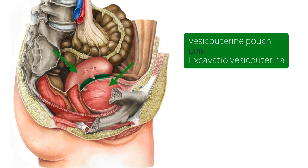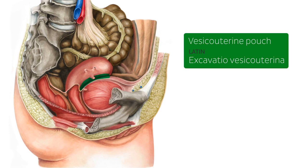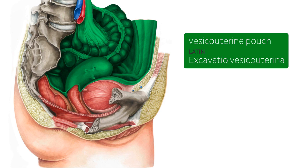Note that the vesicouterine pouch is of course only found in the female pelvis, since it requires the presence of a uterus. So let's talk about how the vesicouterine pouch is formed. As we can see in this slide, the urinary bladder and the uterus are infraperitoneal organs, meaning that they lie inferior to the peritoneum, shown here in this slide in green. And as we can see, the peritoneum extends over much of the superior surface of the urinary bladder, which is just here.